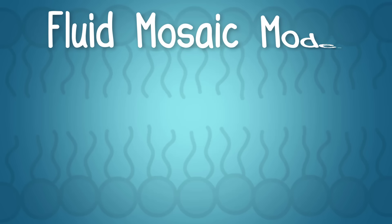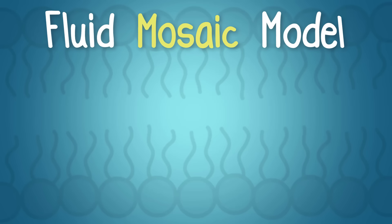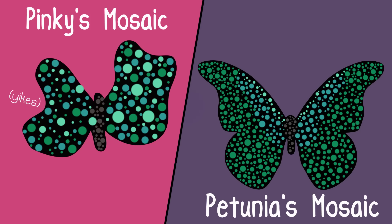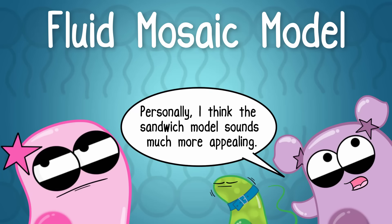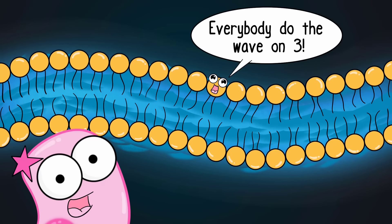The fluid mosaic model is often what we use to describe the cell membrane. A mosaic arranges many small pieces together to make a large piece, and the word fluid implies movement — the components of the cell membrane are floating around; they're not static. So let's take a look at some of these components.